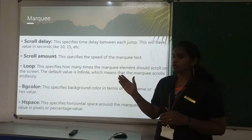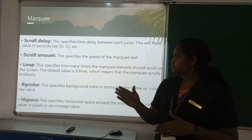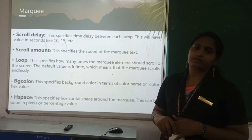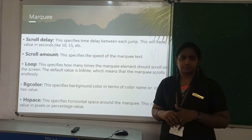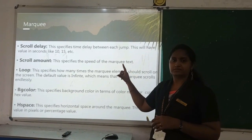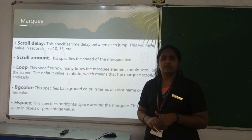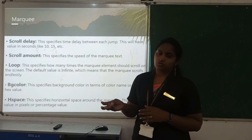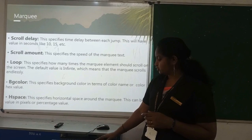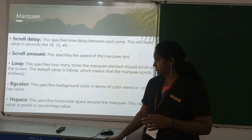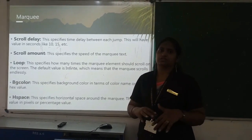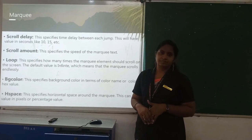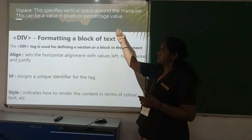Other marquee attributes include loop — for repeating the scrolling effect — bgcolor to apply a background color to the marquee, and hspace (horizontal space) for spacing. Key marquee attributes to remember: scroll delay, scroll amount, loop, bgcolor, height, width, direction, behavior, vspace (vertical space).